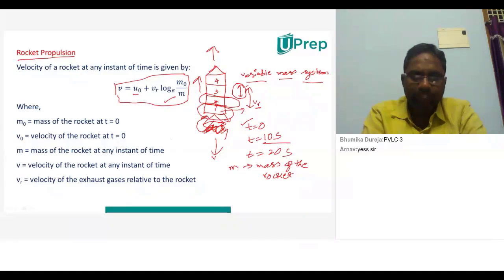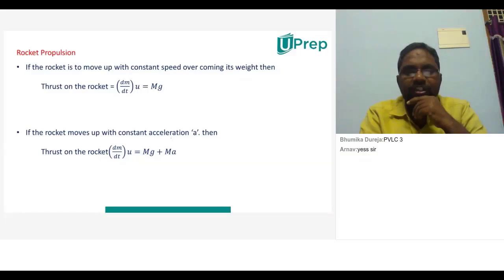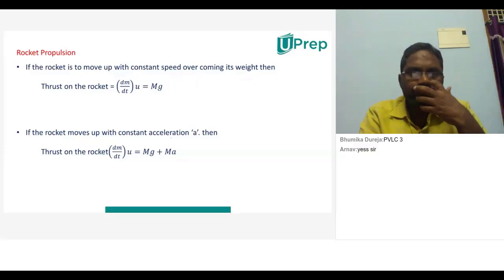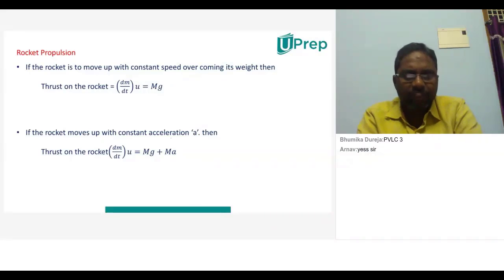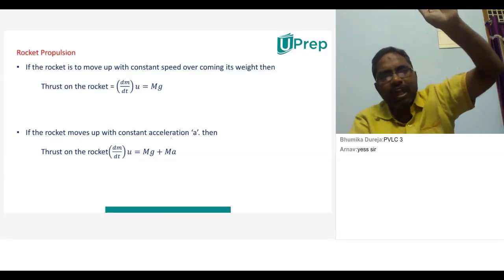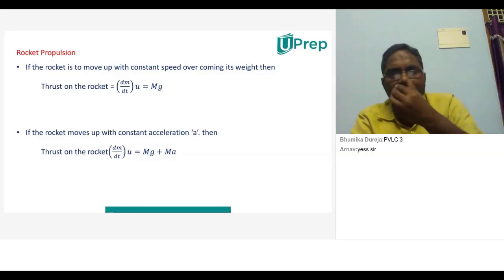In rocket propulsion, if the rocket is to move up with a constant speed overcoming its weight, then thrust on the rocket equals dm/dt × u = mg. Weight acts in the downward direction. When the rocket moves up it has to overcome its weight — otherwise it cannot move up. So whatever thrust is given to the rocket must equal dm/dt × u, and if that equals mg, the rocket starts moving.